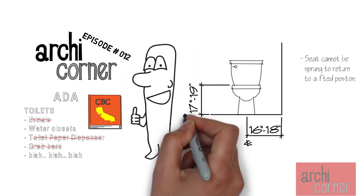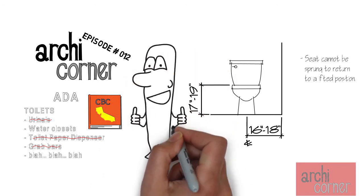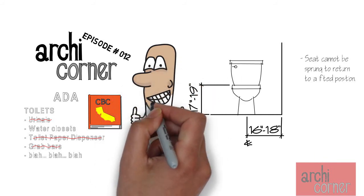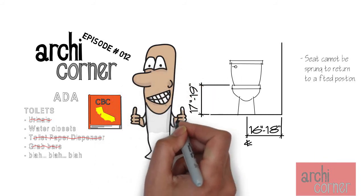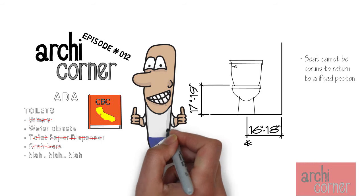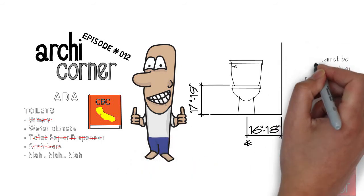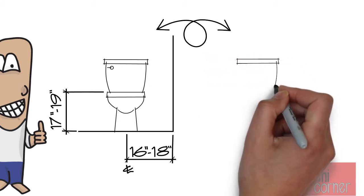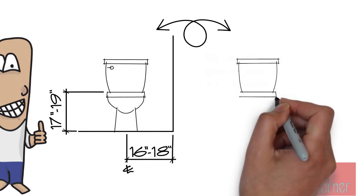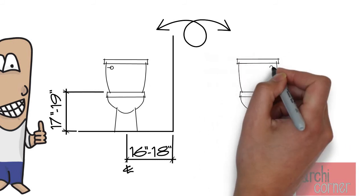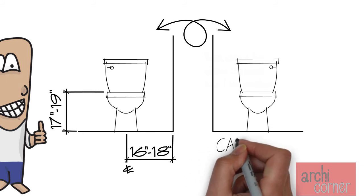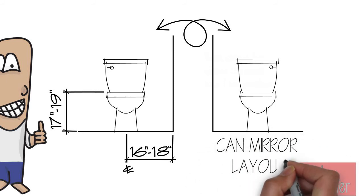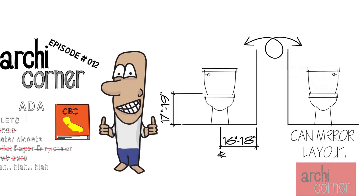In future videos I will talk about the accessories that go into a stall, like toilet paper dispensers and grab bars that are also required. But for now, that's all that is needed for a water closet. And just in case it's not obvious, you can use these toilet layouts in both left hand and right hand position, so you're not stuck to just doing it to the right or to the left. Pretty simple, right?